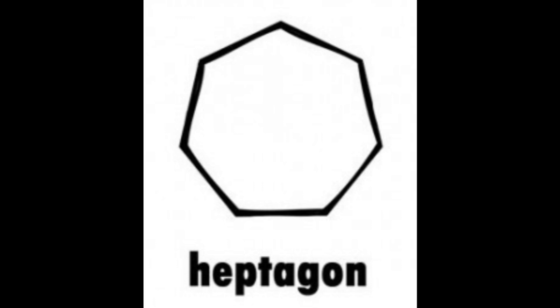A heptagon is a shape that has seven sides and is a polygon made up of seven connecting sides.